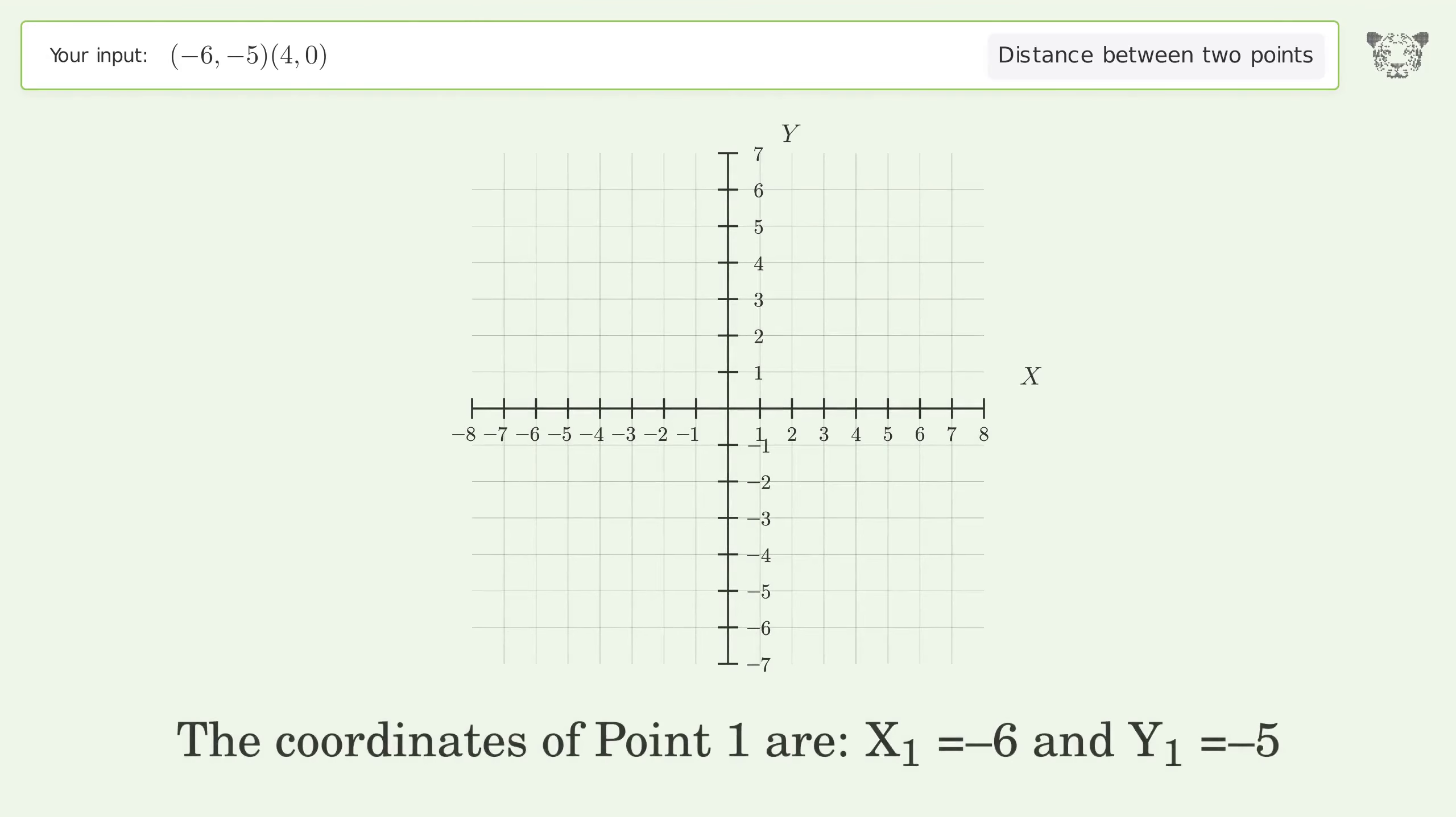The coordinates of Point 1 are x1 equals negative 6 and y1 equals negative 5. The coordinates of Point 2 are x2 equals 4 and y2 equals 0.